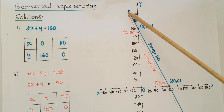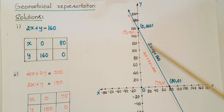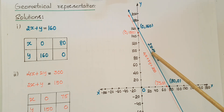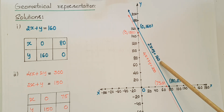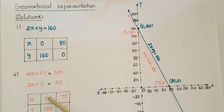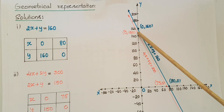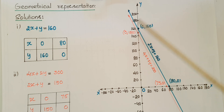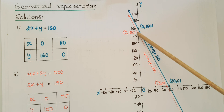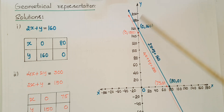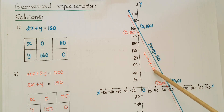Join these two points and you will get a line. This line indicates 2x + y = 160. For the next equation, the coordinates are (0, 150) and (75, 0). Mark these points and join them to get the line which indicates 4x + 2y = 300.